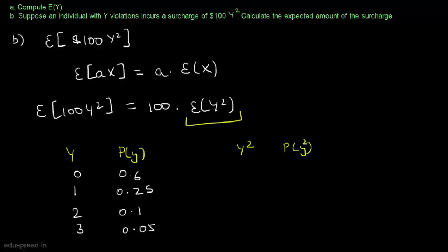When Y=0, Y²=0 with probability 0.6. When Y=1, Y²=1 with probability 0.25. When Y=2, Y²=4 with probability 0.10. When Y=3, Y²=9 with probability 0.05. As you can see, the probability values in these cases are identical to those of Y, which is logical.